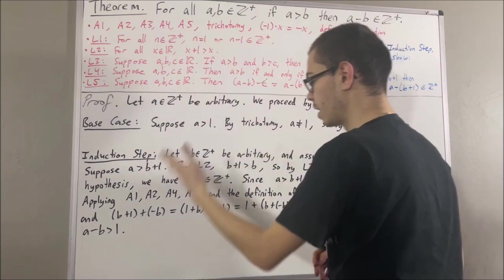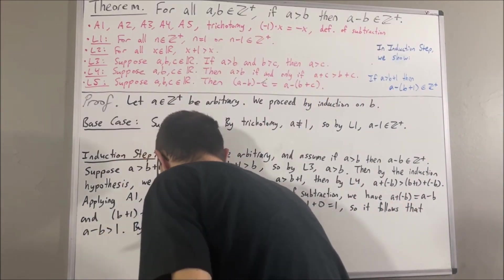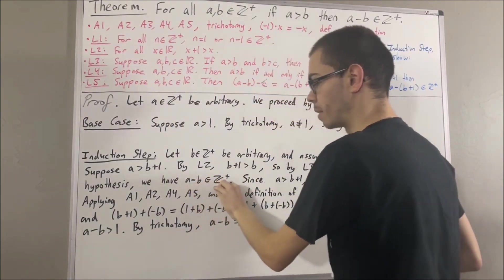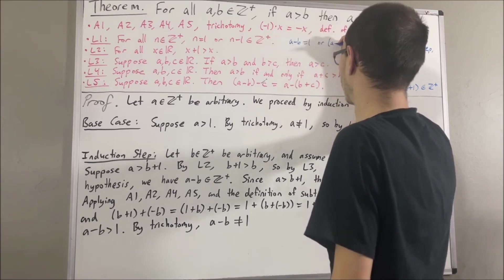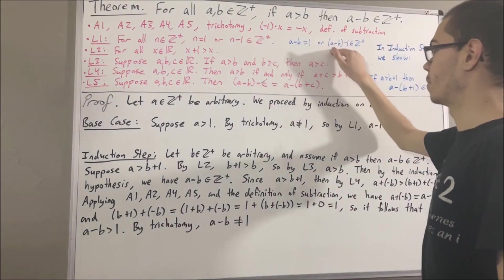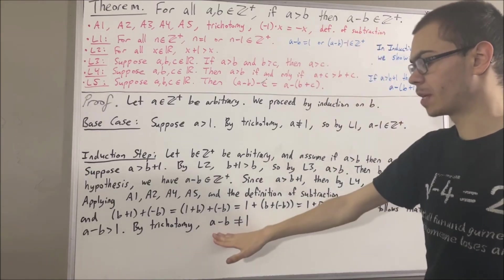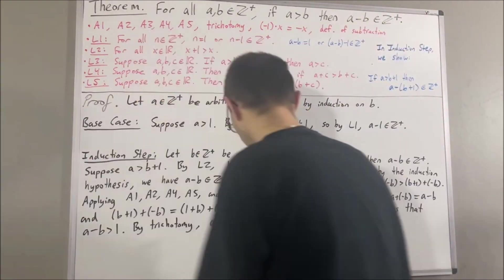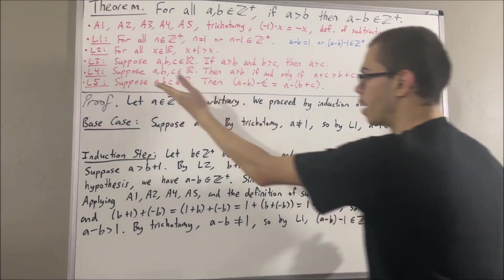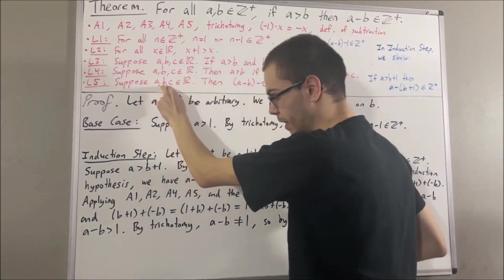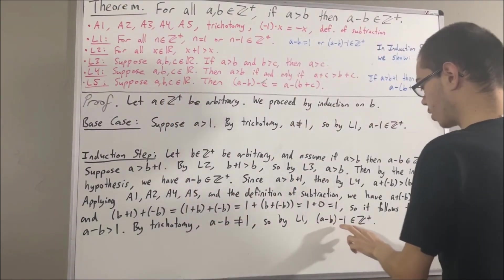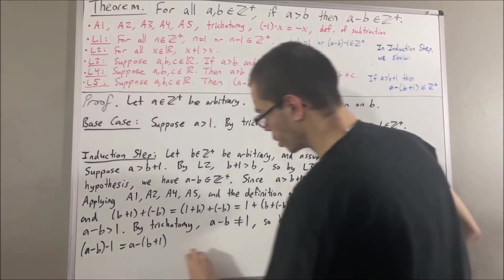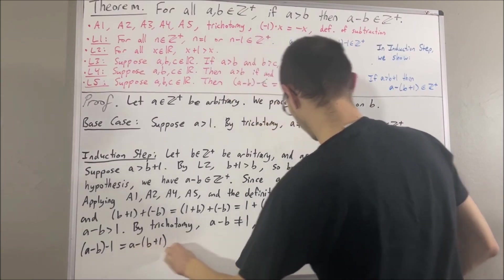Well, then, by trichotomy, this means a minus b is not equal to 1. So, then, we apply L1 to a minus b, since we know a minus b is a positive integer. So, we have a minus b is equal to 1, or a minus b minus 1 is a positive integer. Well, we know that a minus b is not equal to 1, so we must have that a minus b minus 1 is a positive integer. Well, then, applying L5, we take a to be a, b to be b, and take c to be 1. In that case, a minus b minus 1 is equal to a minus (b plus 1). So, we can substitute: a minus (b plus 1) is a positive integer.